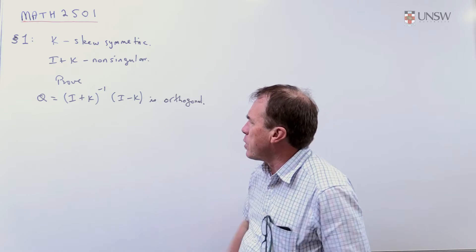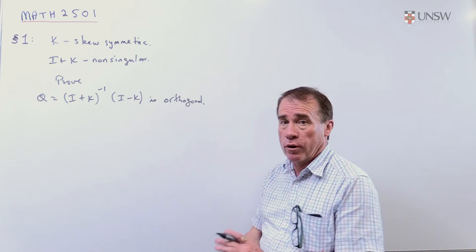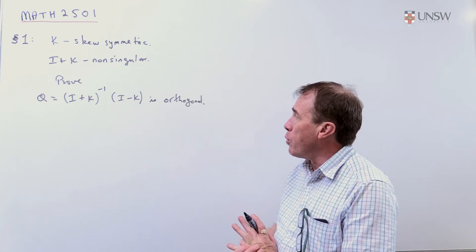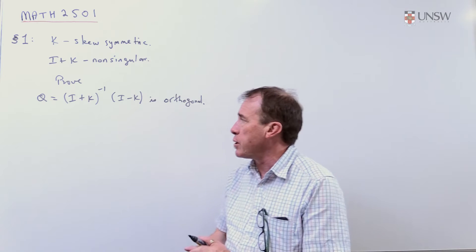And we're going to prove that this product here, this I plus K inverse times I minus K, is an orthogonal matrix. So the point of this particular problem, it has a number of very useful things about this problem.